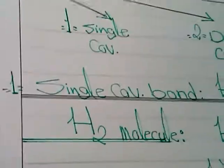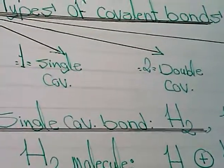In the first type, single covalent bond, we have two examples: forming of hydrogen molecule H2, and forming of water molecule H2O.